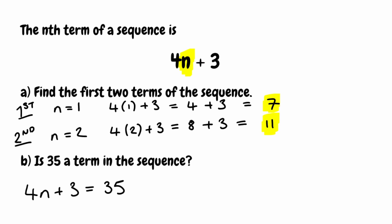We've got a two-step equation: 4n plus 3 is equal to 35. To begin with I'm going to get rid of this 3 — I've got plus 3 on the left, so I'm going to subtract 3 from both sides. On the left, 3 take away 3 cancels, leaving just 4n. On the right, 35 take away 3 gives us 32. So 4n is equal to 32.